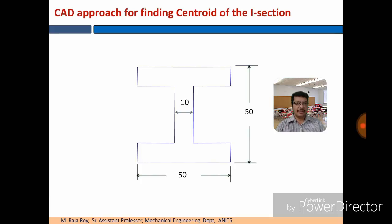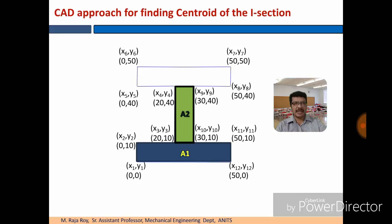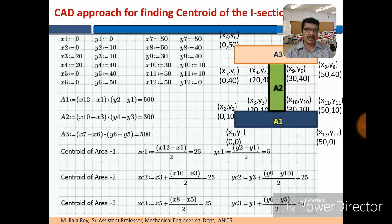Take the i-section as shown here with the given dimensions and find the centroid. The coordinates of the i-section will be something like this. This portion is the first portion of the total cross section, that is first area a1. Then this is the second area a2. This is the third area a3. Now, use the equations as shown here and find the centroid. Individual centroids for the areas a1, a2, a3 are shown here.